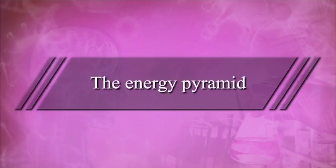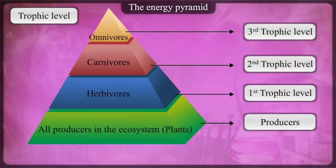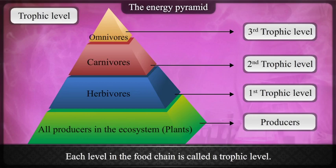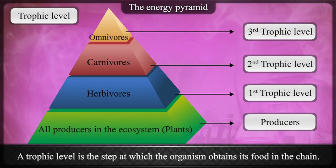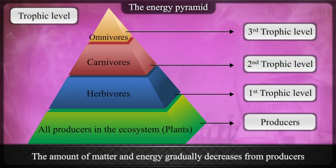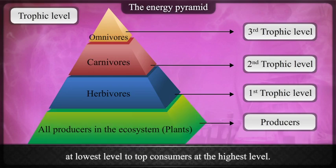The Energy Pyramid. Each level in the food chain is called a trophic level. A trophic level is the step at which the organism obtains its food in the chain. The amount of matter and energy gradually decreases from producers at the lowest level to top consumers at the highest level.